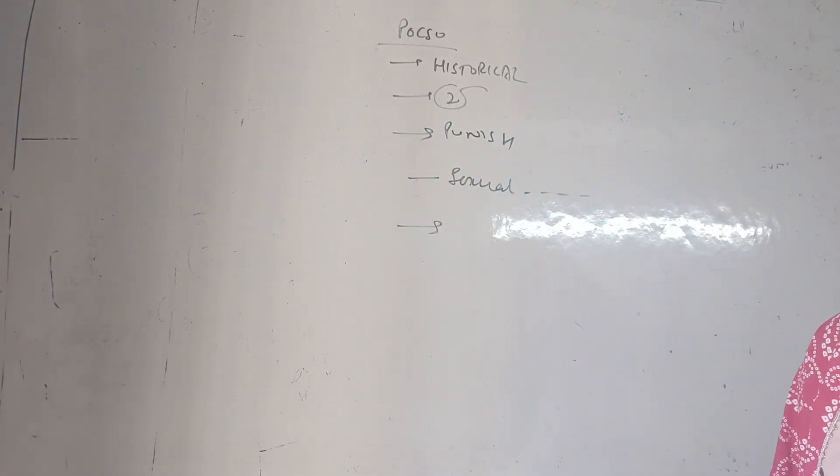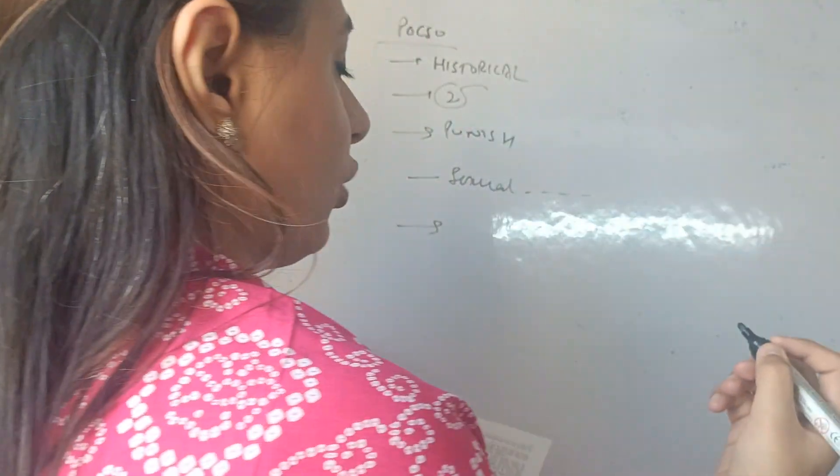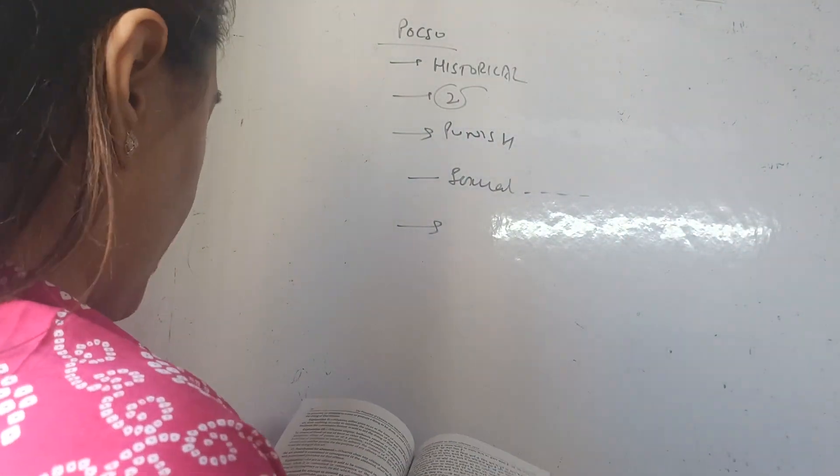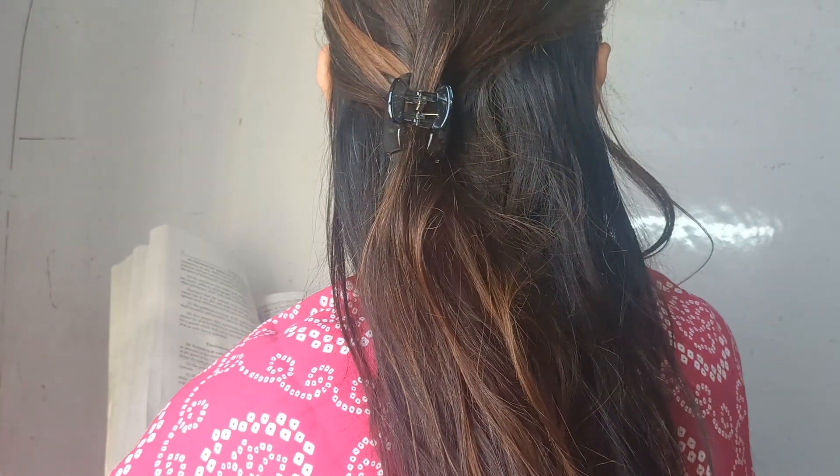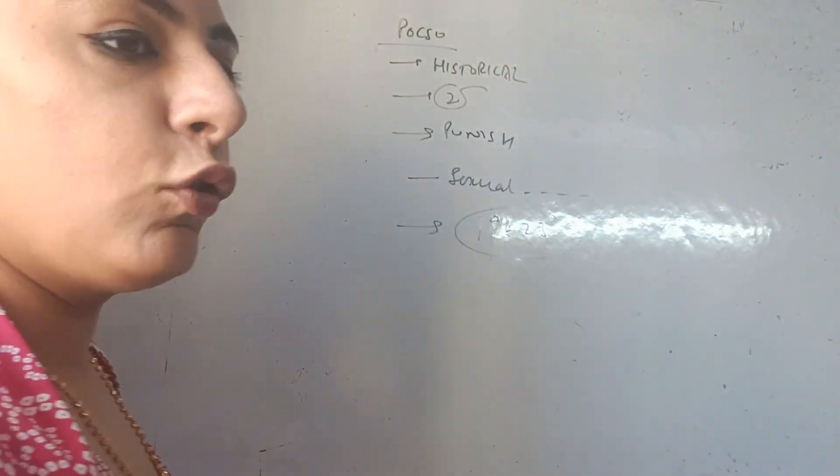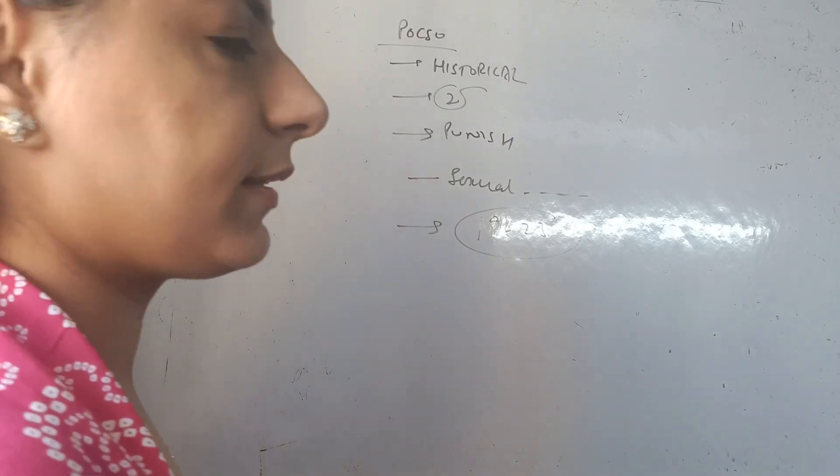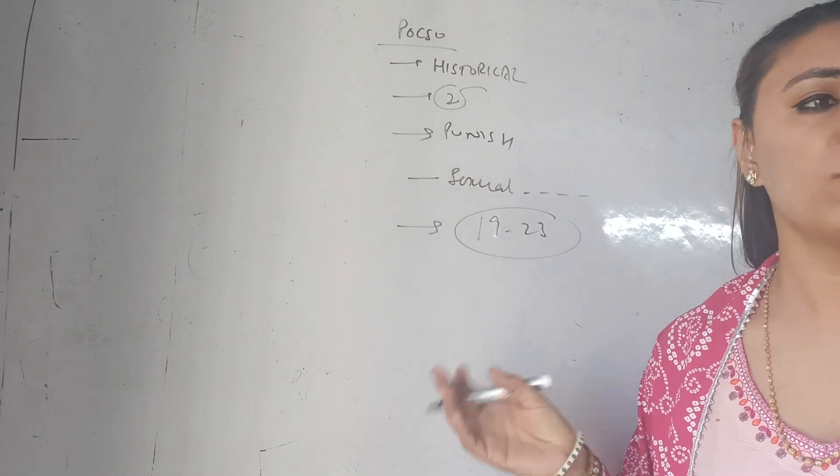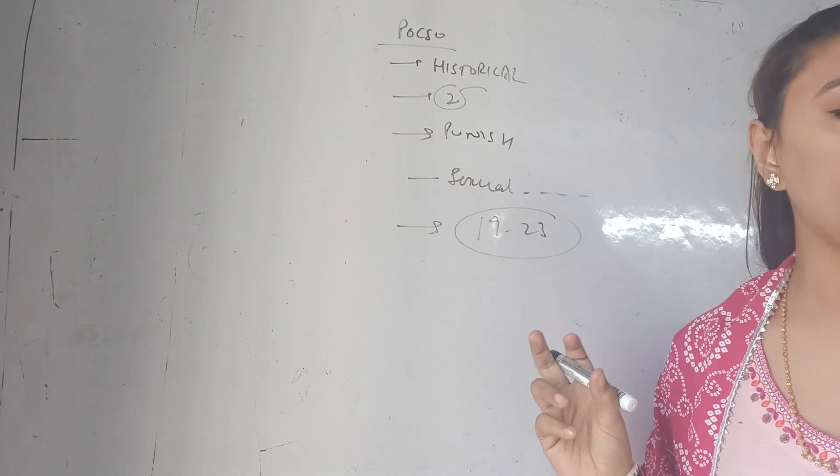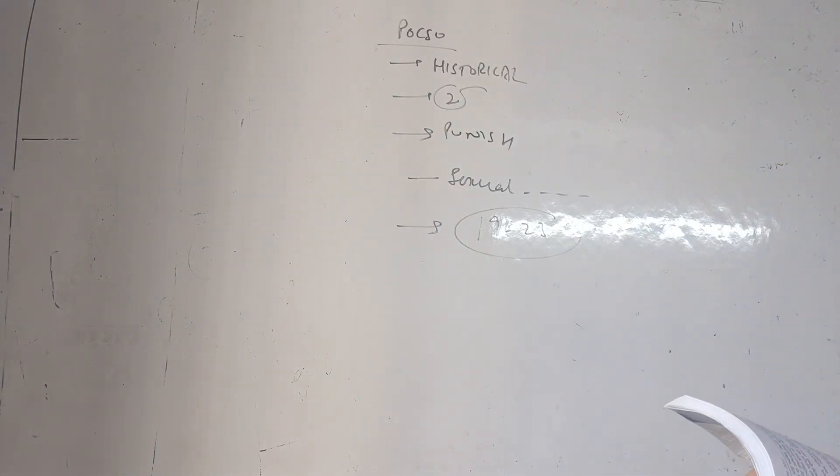After that what we did is Chapter Number 5, how is the report? So if a question comes to you, how is the report, then you have to write 19, 20, 21, 22, 23. 19 to 23 is complete. 19 I have already told you, but you have to write detailing in detail. 20 to 23 you should know like this.